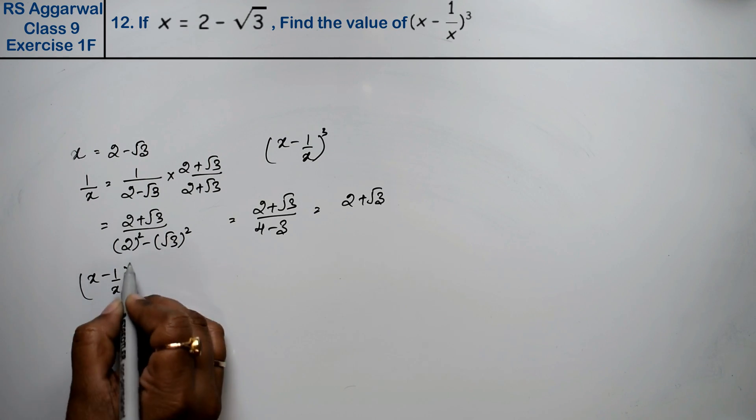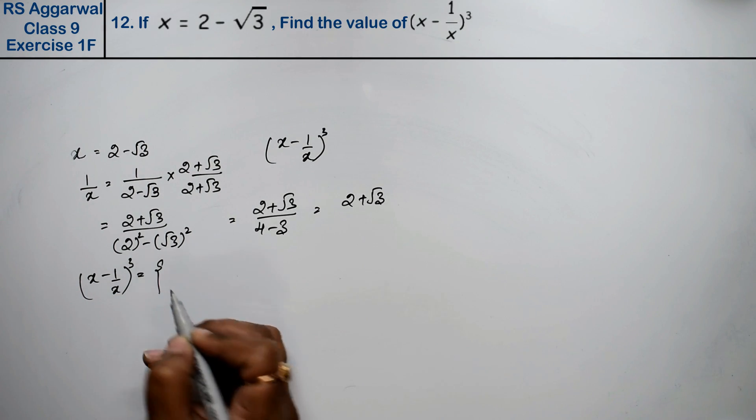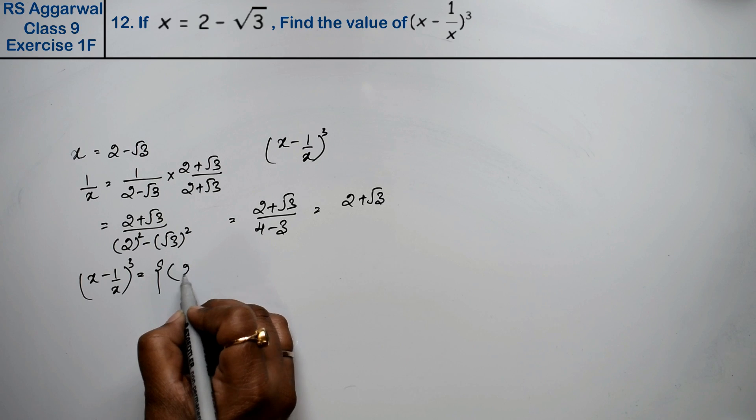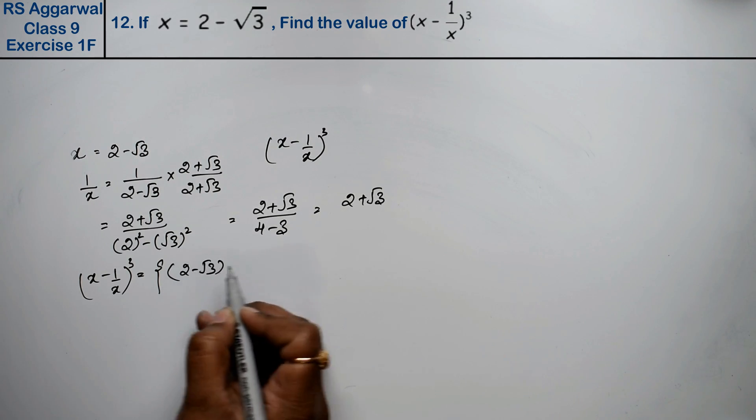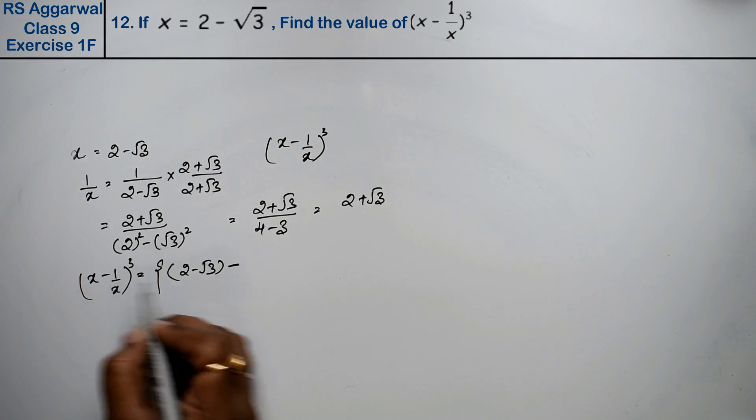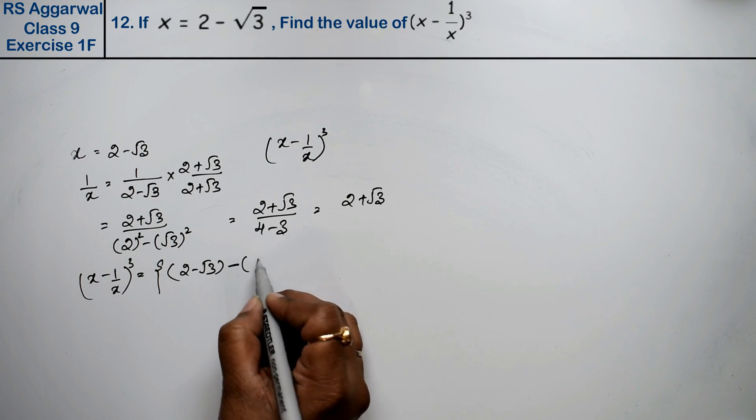Now we need to find (x minus 1/x) whole cube. Put the values in middle brackets: x value was 2 minus root 3, minus sign, and 1/x value was 2 plus root 3.